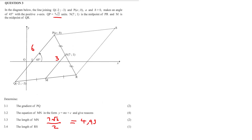Question 3.4: The length of RS. There was an issue in the paper — an errata sheet was sent out. The assumption required was that QN bisects PR, meaning PQRS is a parallelogram. Since diagonals of a parallelogram bisect each other, RS has the same length as QP, so RS = 7√2.